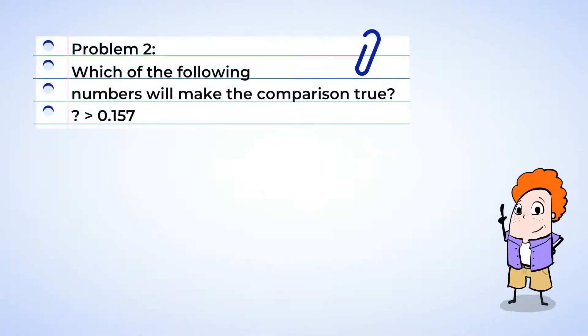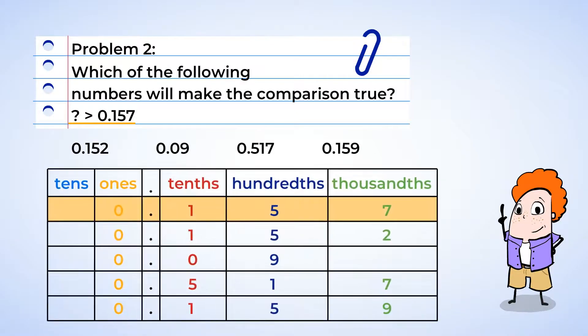All right, moving on to the next problem. Which of the following numbers will make the comparison true? Well, we can read this as what number is greater than one hundred fifty-seven thousandths? All right, let's get to work. And we can line up all of the numbers vertically in a place value chart and compare them, starting with the tenths.